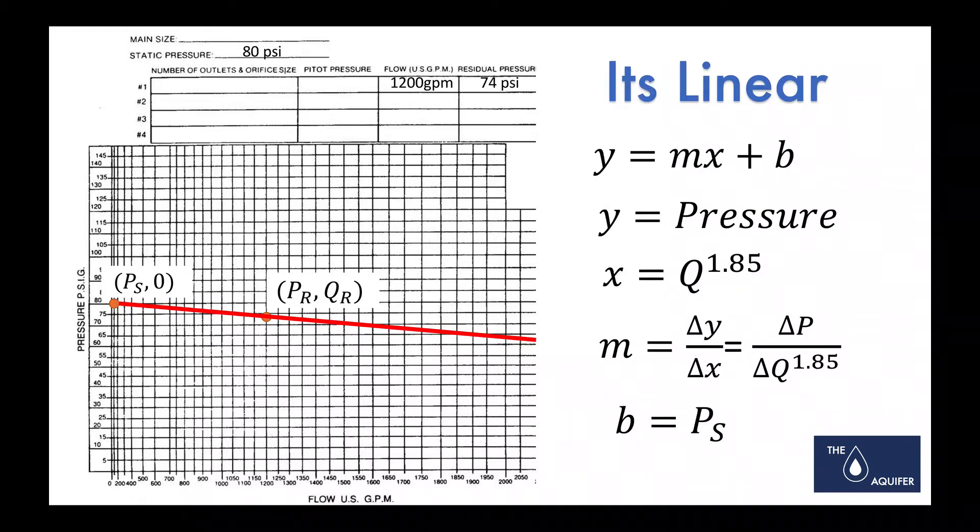So you look at this thing and this is basically your typical linear relationship. It's Y equals X plus B. Y is your pressure, of course, and then X is your flow to the 1.85 power.